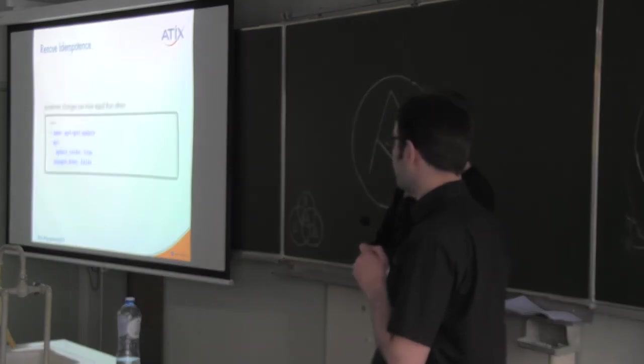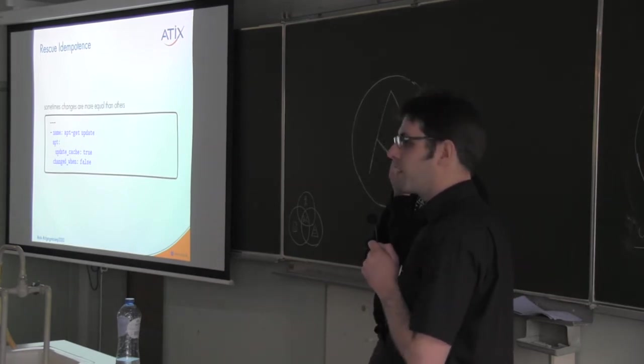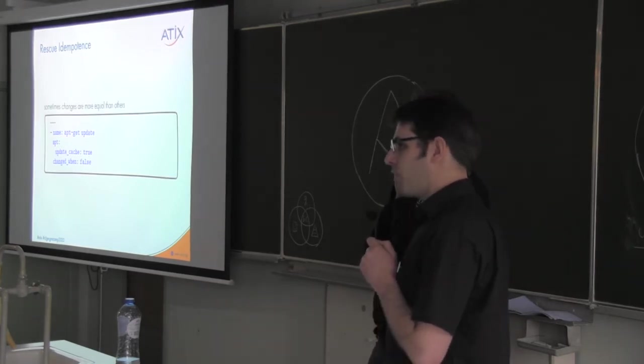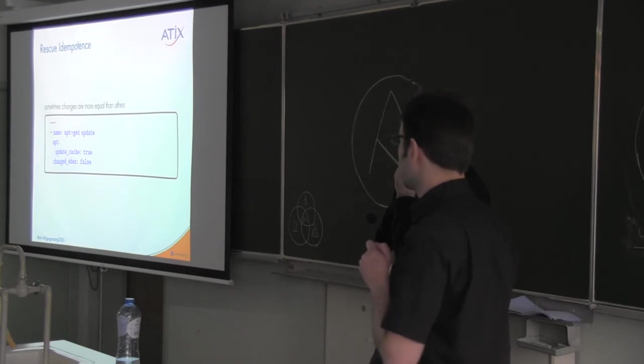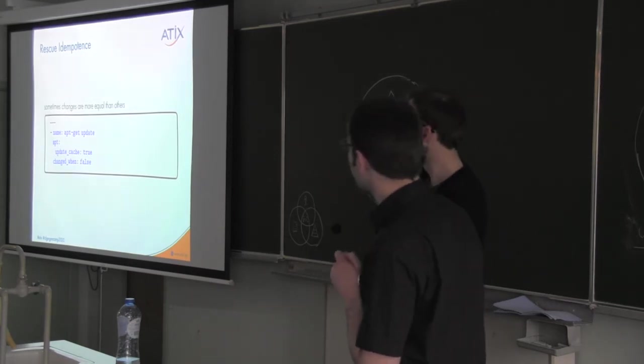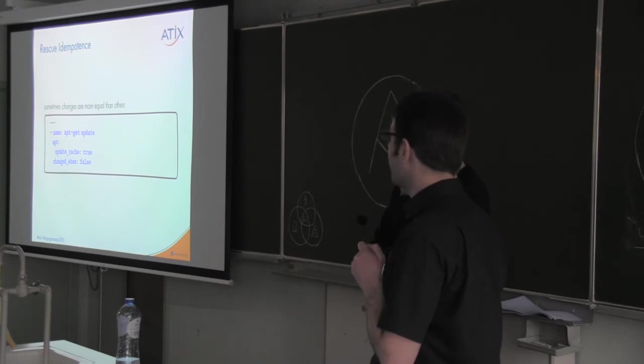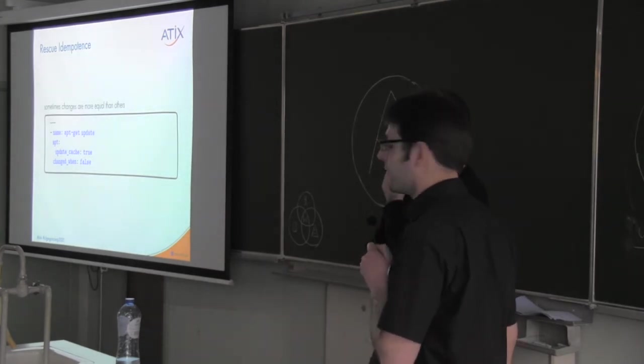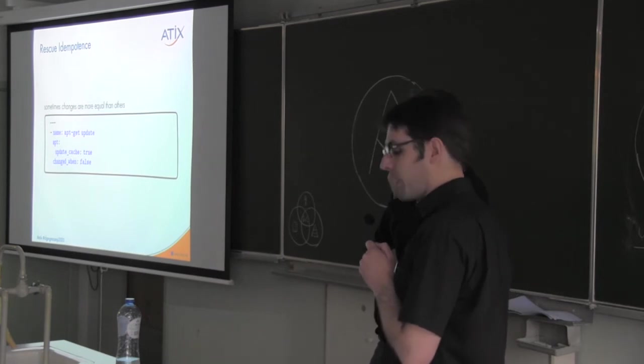But, let's make an example. If you are on a Debian-based machine, and you want to install packages, you first need to update the list of available packages, which technically is a change to the box, but it's not really a change to the state you are interested. So, the Ansible command for apt to update your cache will report a change here always, but your role doesn't, isn't really interested in that change. So, sometimes you can get around that by just specifying that the task didn't change anything. So, sometimes you can rescue the idempotence test.